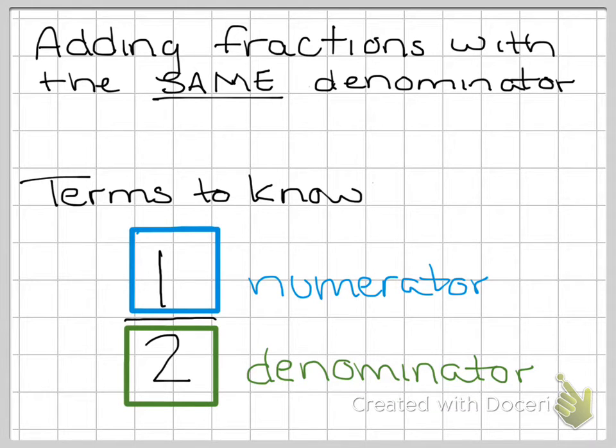So this fraction can either be called one-half or 1 over 2. And that's how we can name fractions. So for this lesson, you'll just need to remember that the top number is called the numerator and the bottom number is called the denominator.